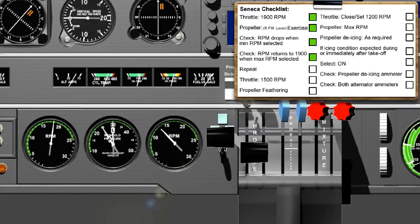Check, RPM returns to 1900 when max RPM selected. Return the propeller control lever to maximum RPM and check that the RPM recovers back to 1900 as the propeller blades move back towards fine pitch. Repeat the previous two checks again. By doing this, you'll ensure that warmer oil is being introduced into the propeller control mechanism and the associated pipework. The warmer oil will sharpen up the propeller's response to your movement of the propeller control lever.